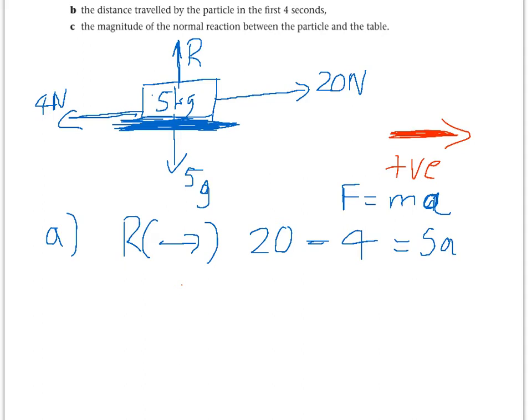We know the mass is 5 and we want to find the acceleration. So 20 minus 4 is 16, equal to 5A. So A is equal to 3.2 metres per second squared.